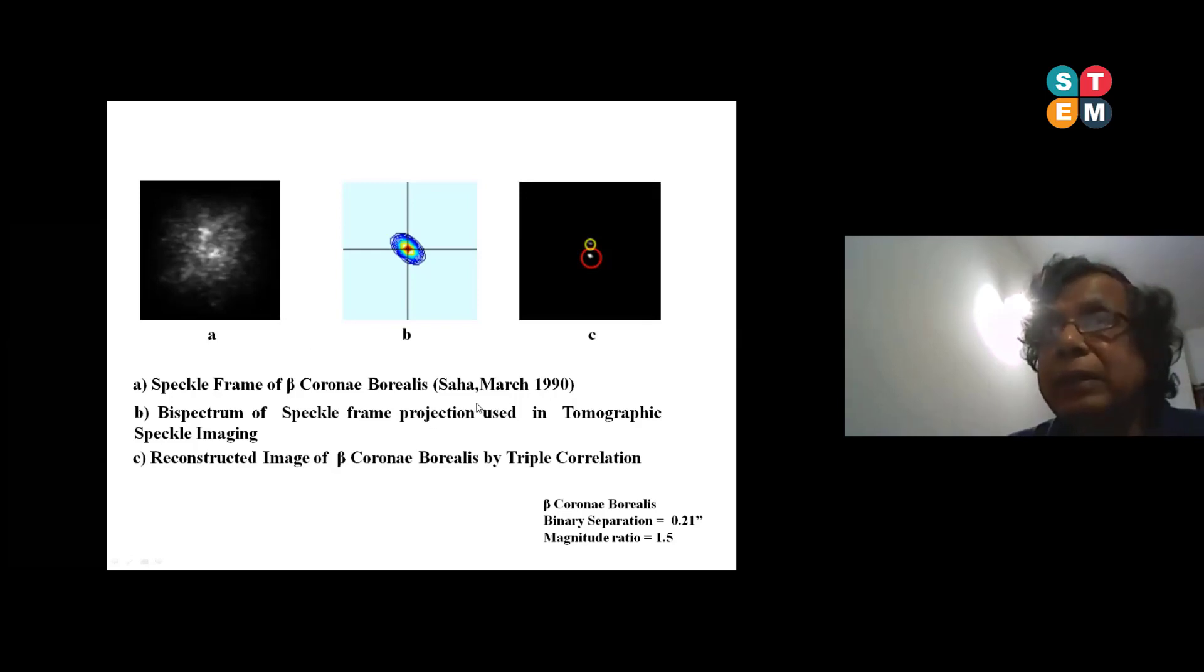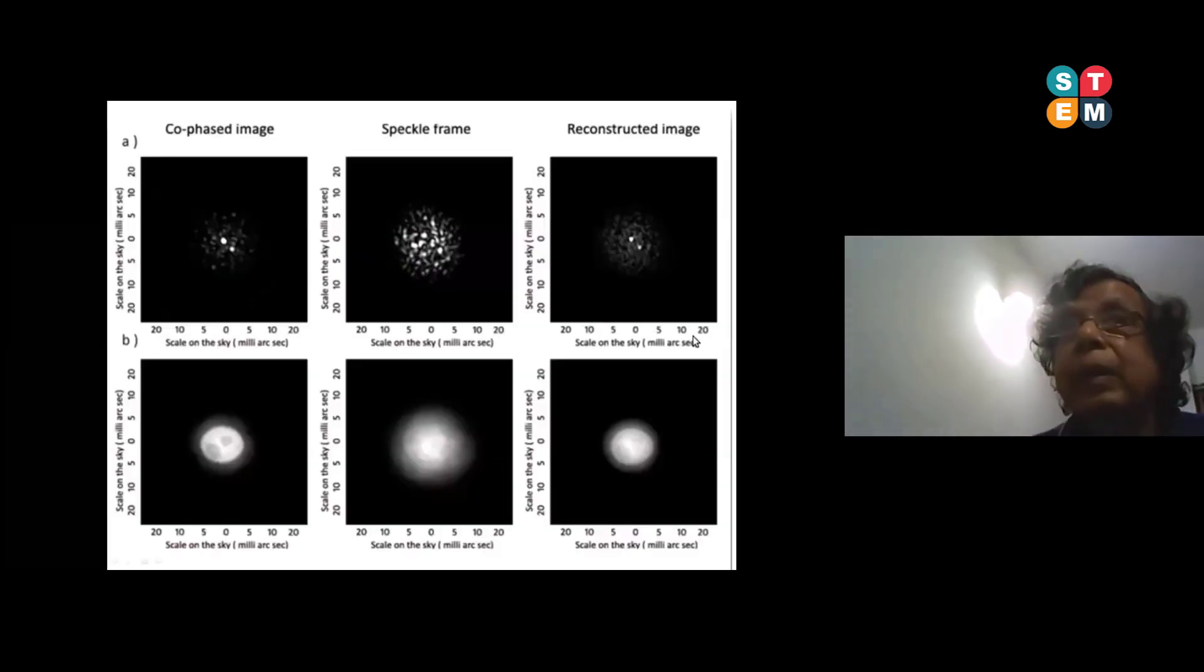So all those calculations we used MATLAB 32-bit program. Now the actual speckle data - it's a single frame. After projection of this is a bi-spectrum speckle frame projection used in tomographic, we got the binary system which exactly is matching with the blind deconvolution calculation we have done earlier. It was showing the separation 0.21 arcseconds and magnitude ratio also showed 1.5. We use some kind of simulation, speckle frame, reconstructed image with tomography. We do the extended object also.